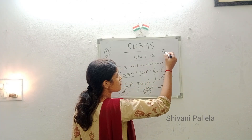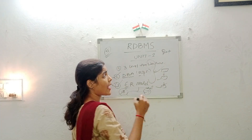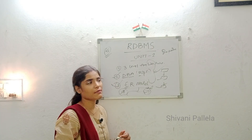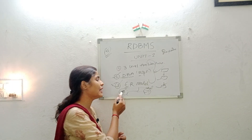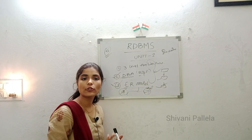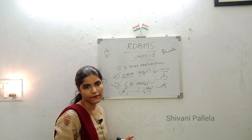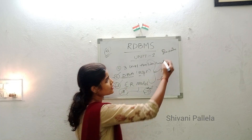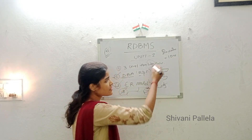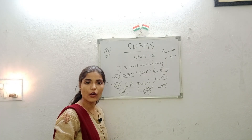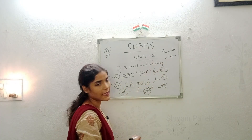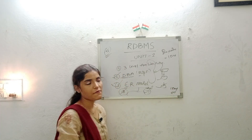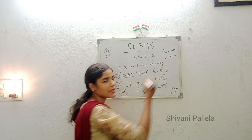If you learn these three topics from unit one — three-level architecture, DBA roles and functions, and ER model — you can definitely attempt one long question worth eight marks and at least one short question. For short questions, five to six lines is enough. For long questions, one and a half to two sides is enough, not two full pages. By learning these three topics from unit one, you can score ten marks. The passing mark is 18 out of 50, so attempting these questions already covers a significant portion.